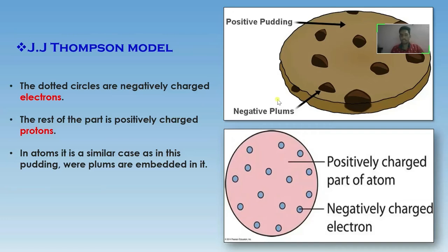Because as in Christmas pudding, the plums are embedded just like the electrons are embedded in the proton. As you guys can see, in this model, the plums are negatively charged electrons and the pudding is positively charged protons.